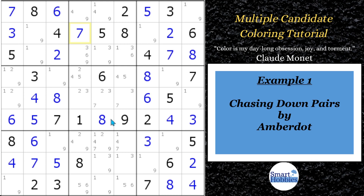For my first example, this is Chasing Down Pears by AmberDot — video and puzzle link below. It's a very fun puzzle, and it's centered on remote pairs. What I want to do is show you how coloring works using remote pairs. This is a good way to show you how multiple candidate coloring works.